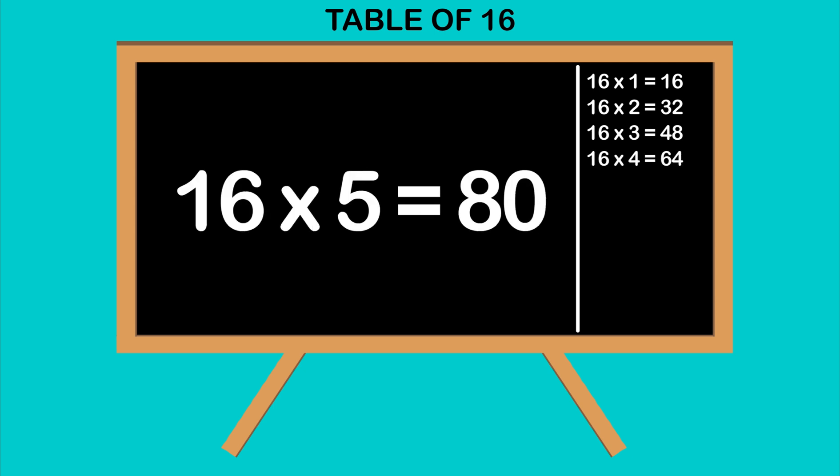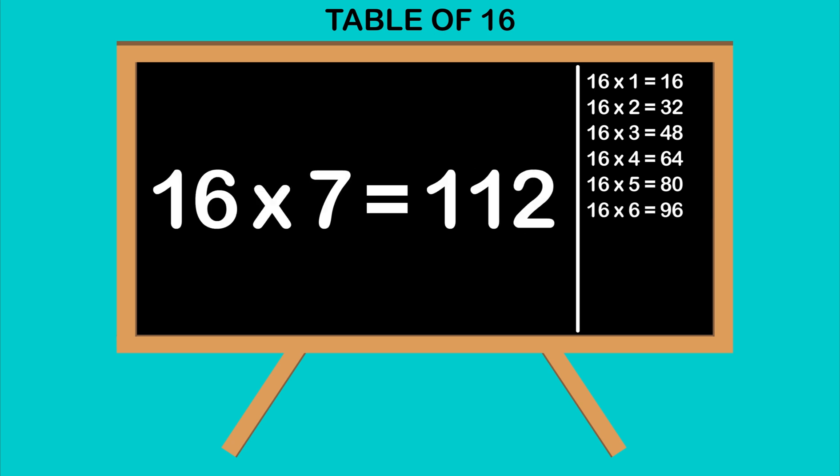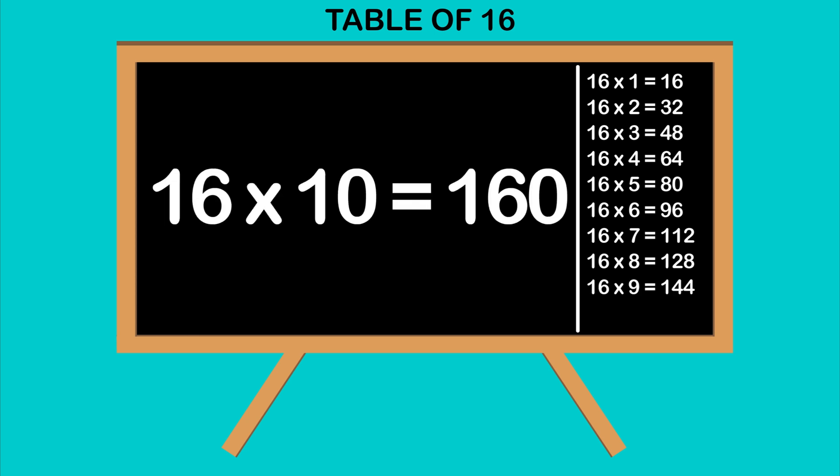16 fives are 80, 16 sixes are 96, 16 sevens are 112, 16 eights are 128, 16 nines are 144, 16 tens are 160.